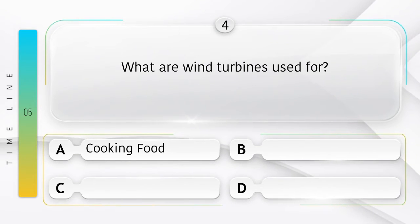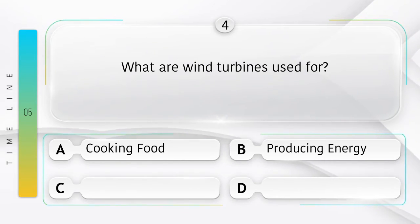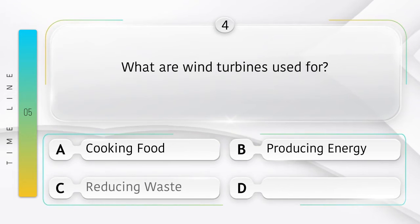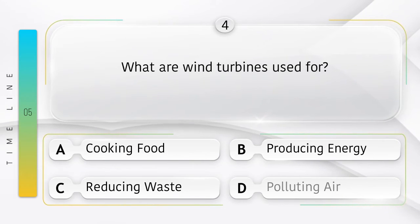What are wind turbines used for? Option A: cooking food. Option B: producing energy. Option C: reducing waste. Option D: polluting air. Answer is option B: producing energy.